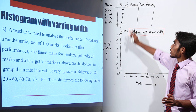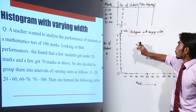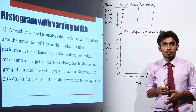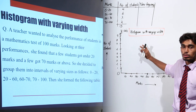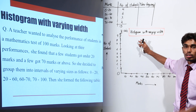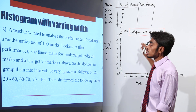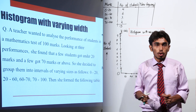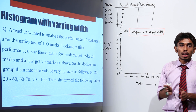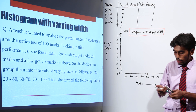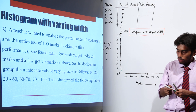So students, we were doing this question in which the width of the class interval was different. So let us try to understand the procedure for drawing a histogram for these kinds of cases. First of all, what we need to do is spot the class interval which has the minimum class width. So let me write the class width of each and every class interval.